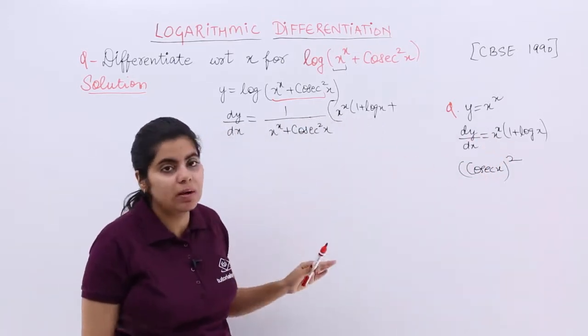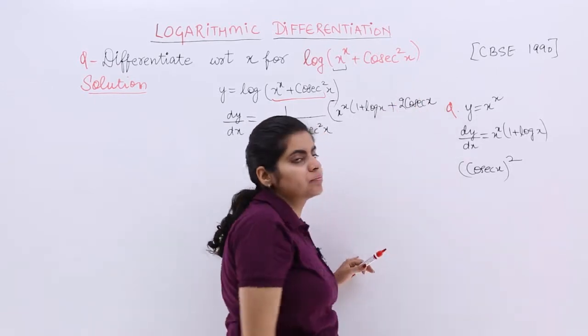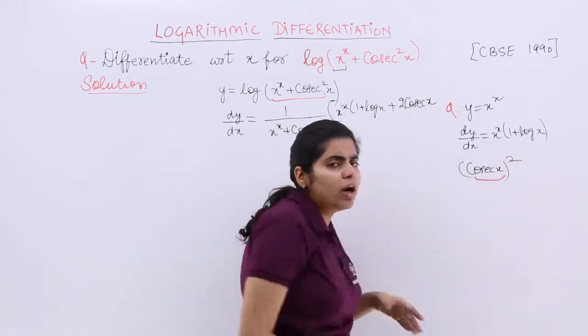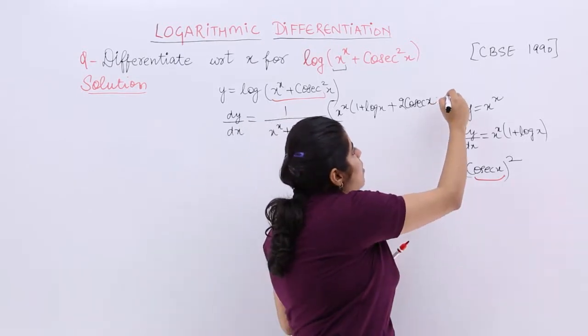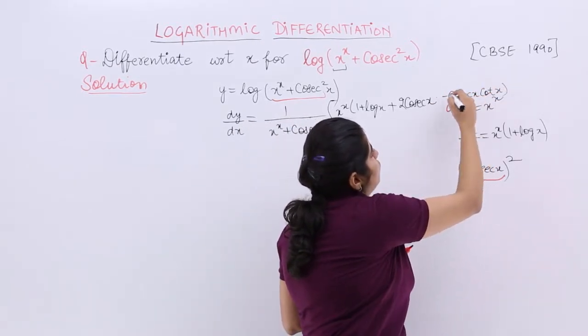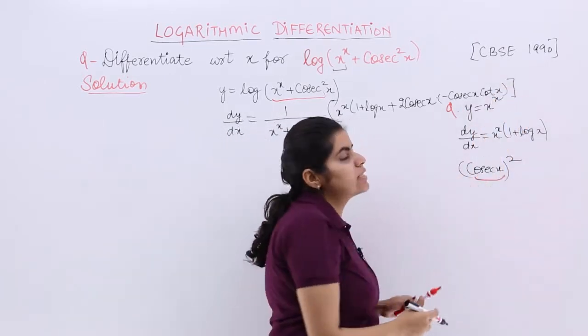So what is the differentiation? 2 comes outside. So it is 2 cosec x. But then you dealt with the power. What is the differentiation of cosec x? It is -cosec x cot x. You know that, right? So here you see that the answer would be something like that.